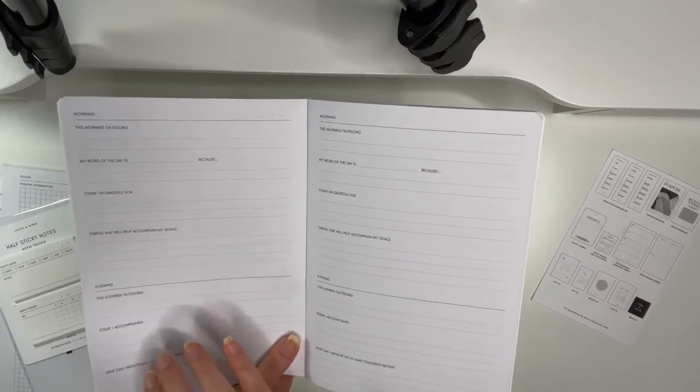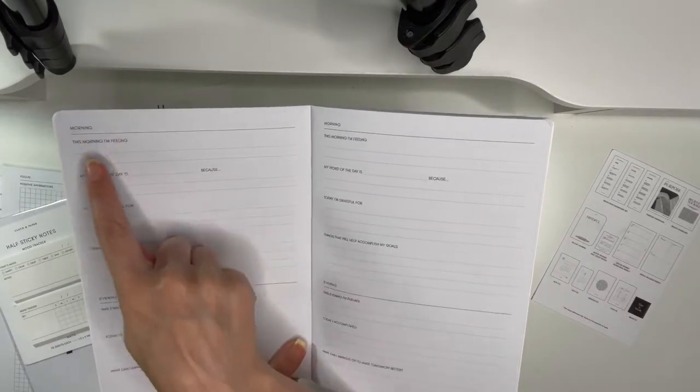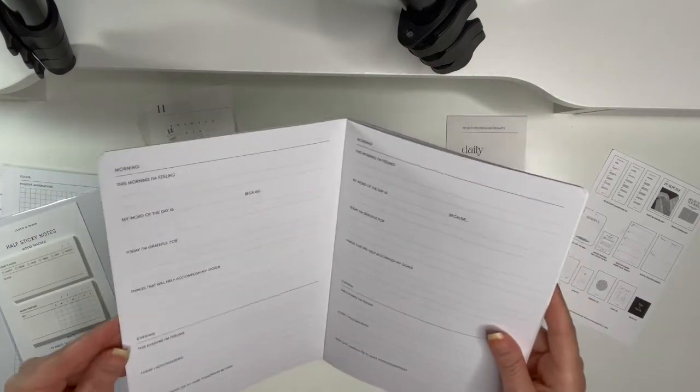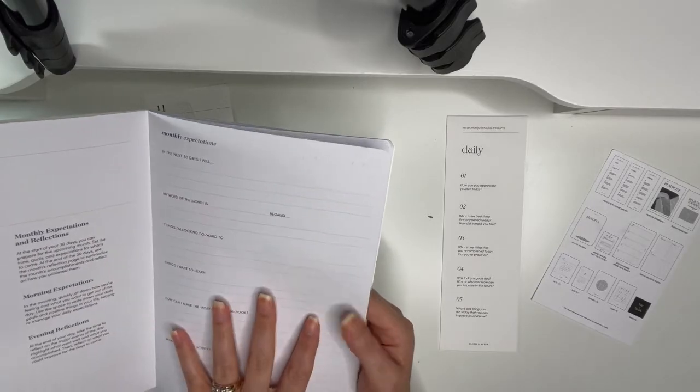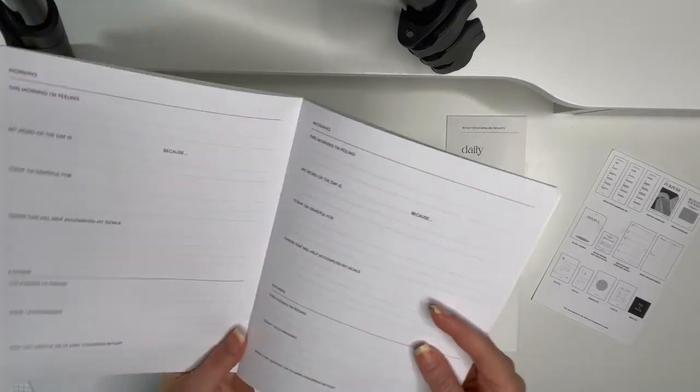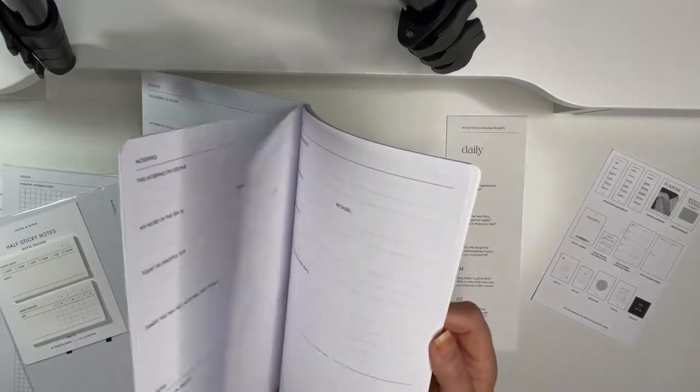So then that's the start of your journal and then this is where you go into the morning. So on the front I was wondering why there's a spot for a date, so that would be the month that you're using this for, and then here you go each day.